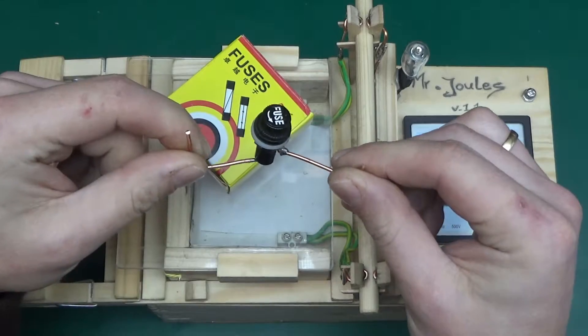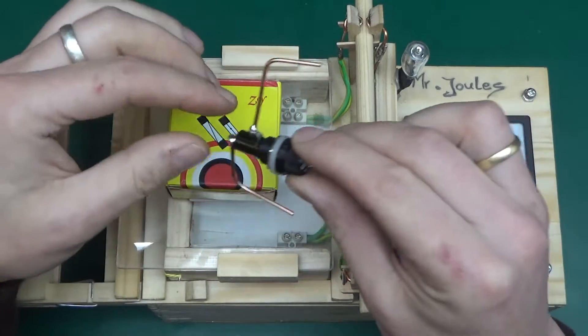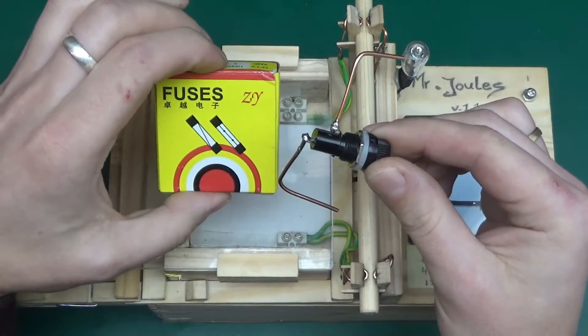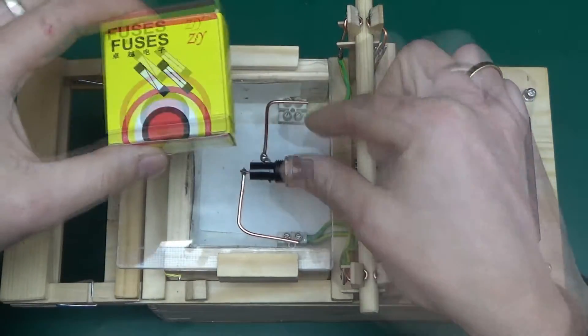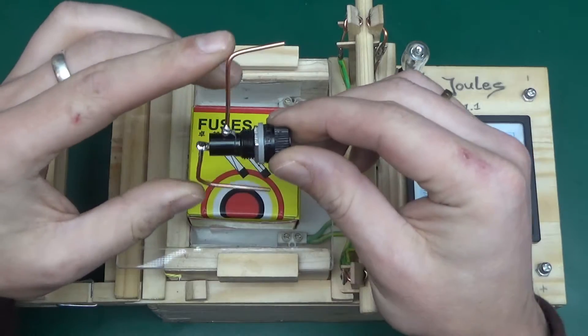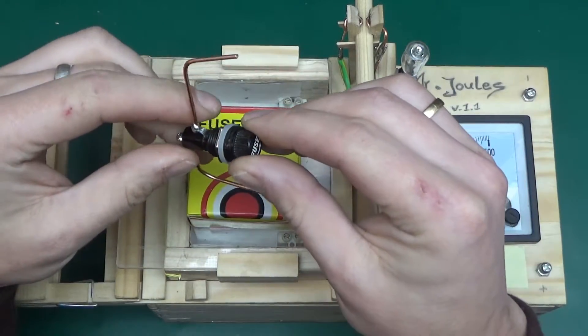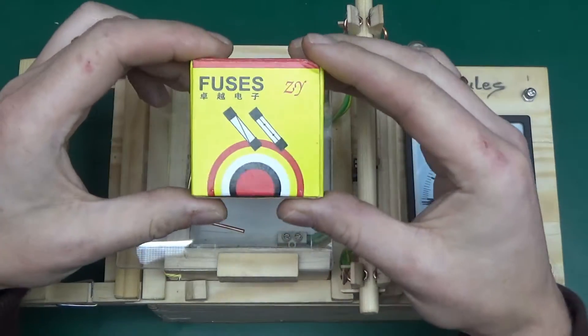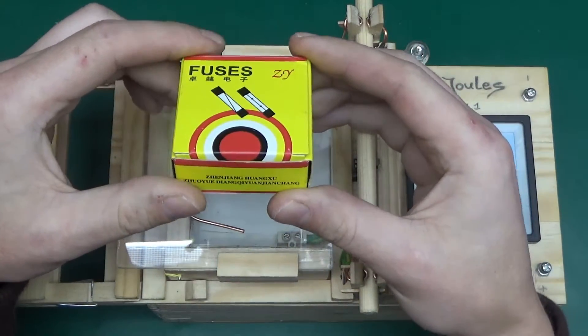A fuse holder like this, and the question is whether a fuse holder like this will actually contain the explosion of a crappy fuse. So I've got the fuse holder and I've already soldered some suitably thick wires just to make it easy for the electrons to get in and out of this, and I've got a box of the crappiest fuses I could find.